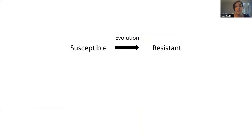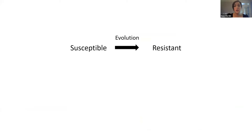I stepped back and thought about this in a very simplistic way. Basically, these organisms are going from being susceptible to antibiotics to resistance through a single step, and that step is evolution. We now know from a lot of what we've heard that there are mutagenic factors — vulnerability factors — that actually speed up this process. The idea is quite simple: what if we can block their activity and inhibit the process in a way that might be productive in the clinic?